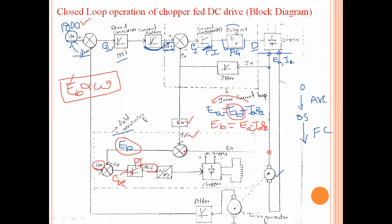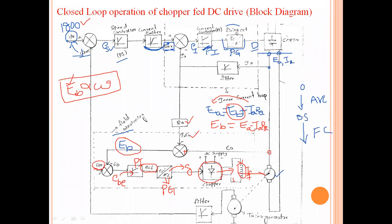The field controller produces a reference field signal, which is given to a pulse generator. This pulse generator produces pulses with the required duty cycle, which are given to the chopper circuit. Based on the pulse width, this chopper circuit supplies energy to the field winding. The current and voltage applied across the field winding are changed according to the duty cycle, so the field excitation changes and the speed of the machine gets changed.